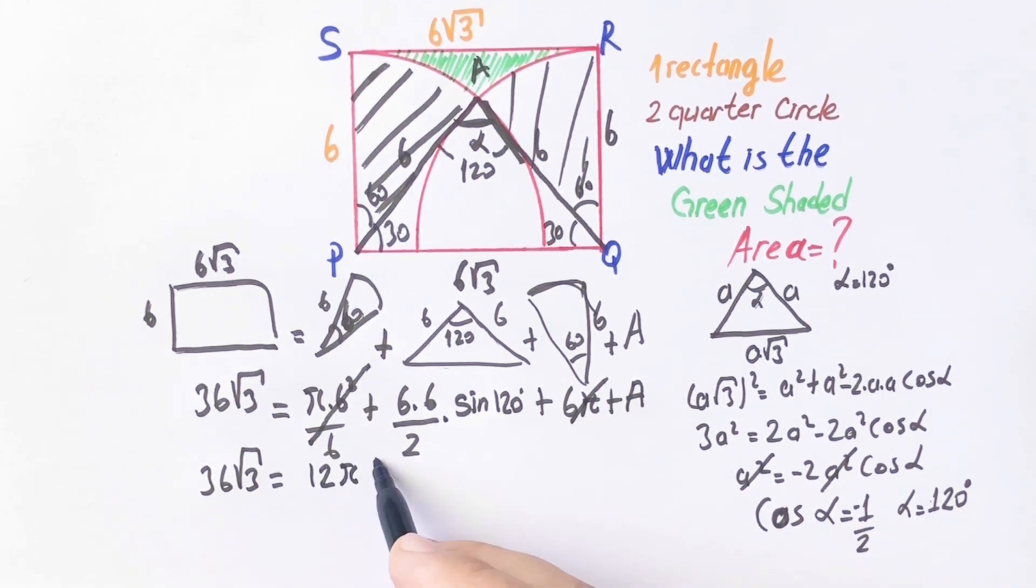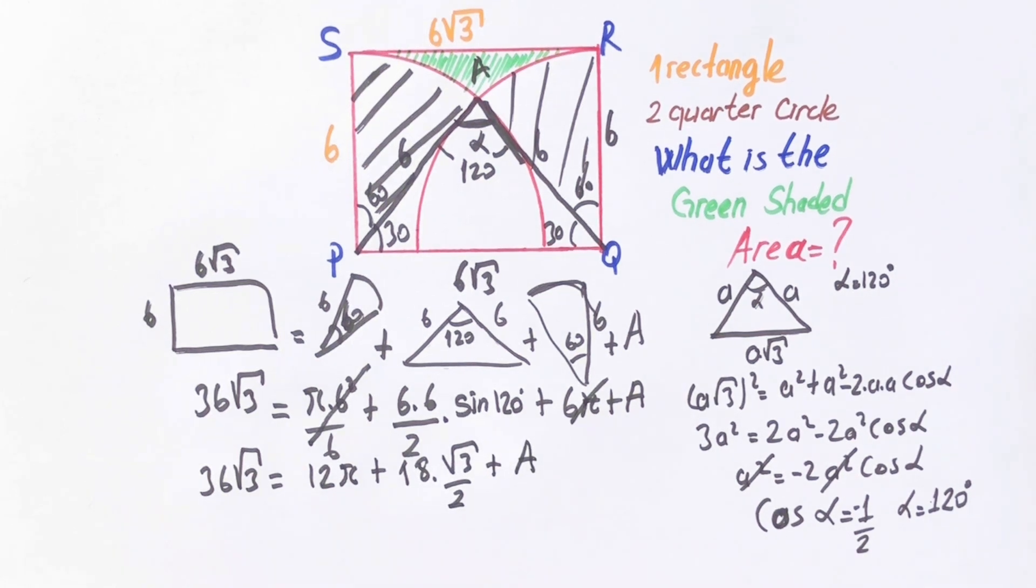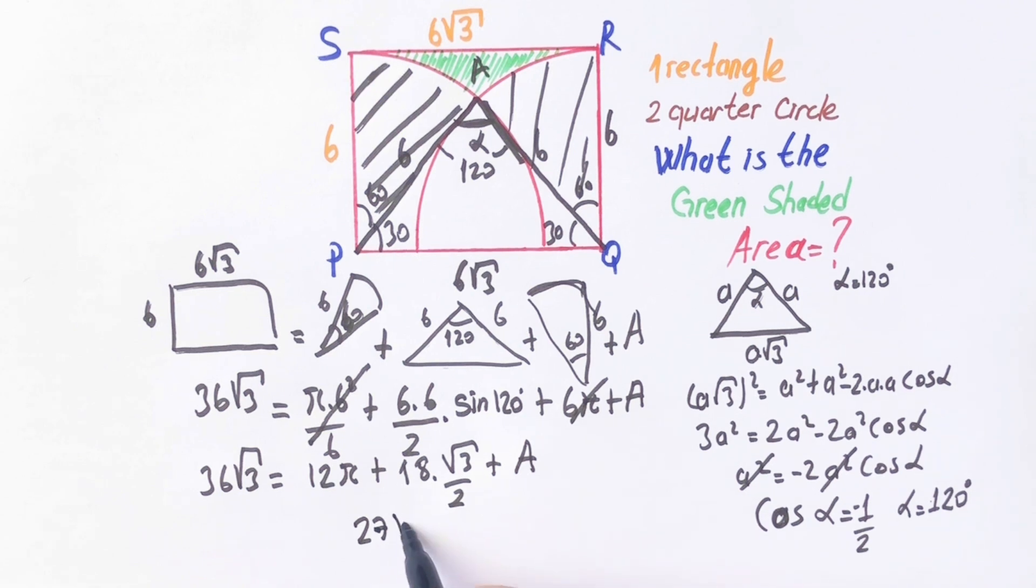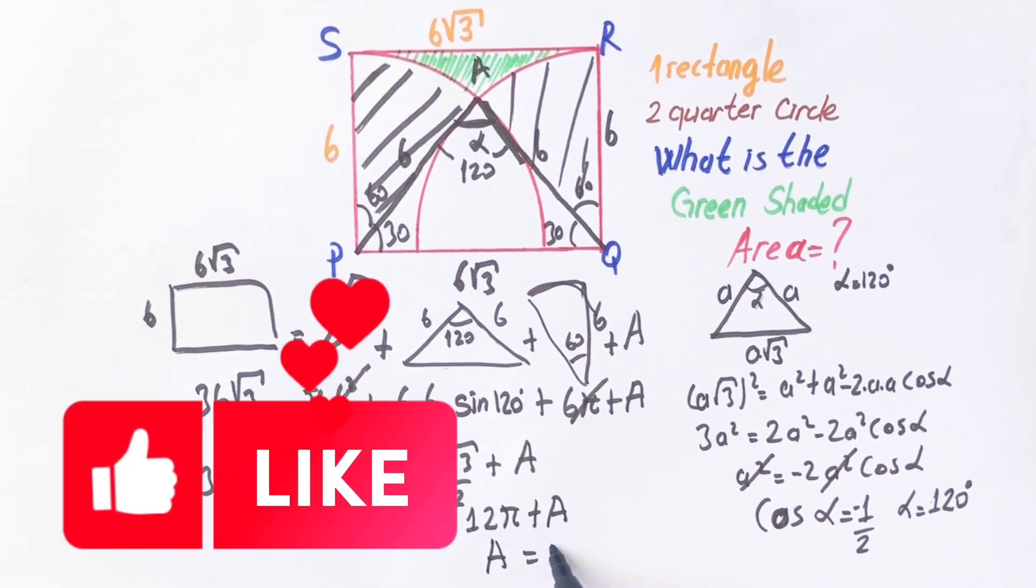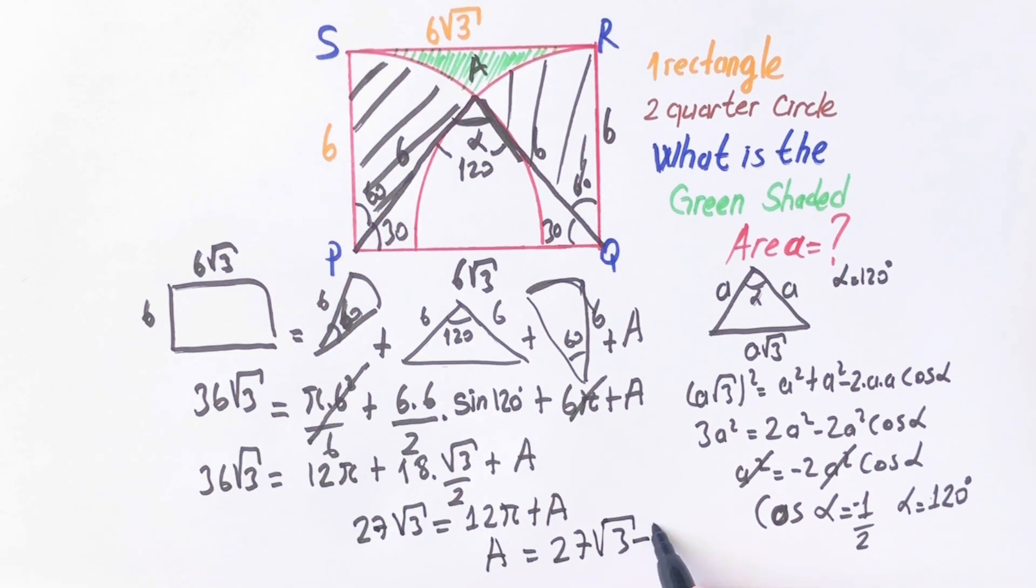12 pi plus 18 times root 3 plus A. So A is going to be 27 root 3 minus 12 pi.